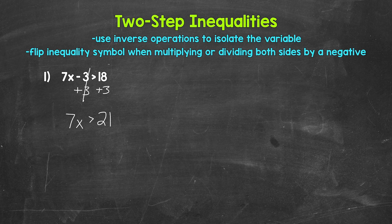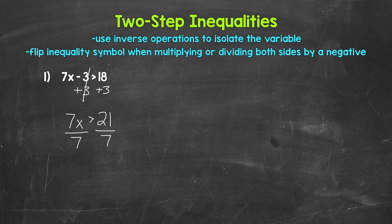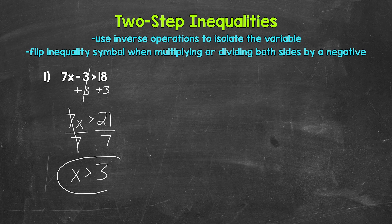Now we have 7x is greater than 21. We need to undo that multiplication using the inverse operation — division. So divide both sides by 7. The 7s cancel on the left, and x is now isolated. On the right, 21 divided by 7 gives us 3. So we get x is greater than 3, and that's our answer.